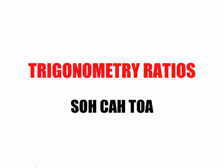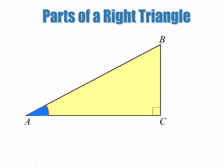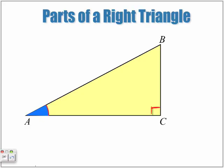Trigonometry ratios is what some teachers like to call the SOH-CAH-TOA lesson. Parts of a right-angle triangle. Here we have our right-angle triangle. We know it's right-angle because we have the right-angle symbol here, which means that this angle is at a 90-degree angle. These trigonometry ratios that we're going to be looking at only work with angles that are 90-degree angles.